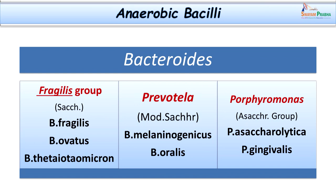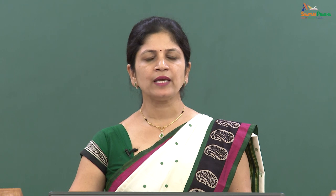This is the classification of anaerobic bacteria. We classify them based on spore-forming nature, morphologically as cocci or bacilli, further by Gram stain, and we need to remember examples in each group because each group is important in the causation of certain clinical infections.